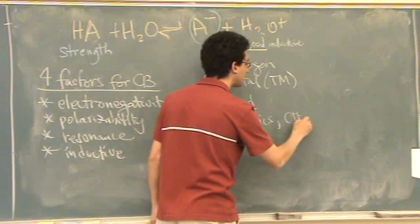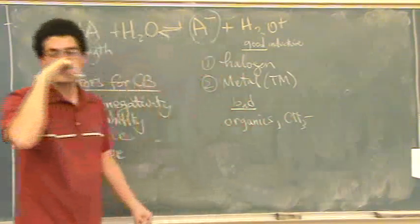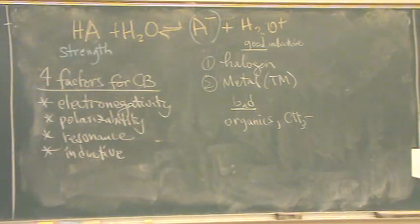And then, bad is for organics. Like CH3. So if you had to compare a bromine, BR, versus a CH3, a CH3 is not just, it's the opposite. It's horrible. It makes the charge concentrated in one area.